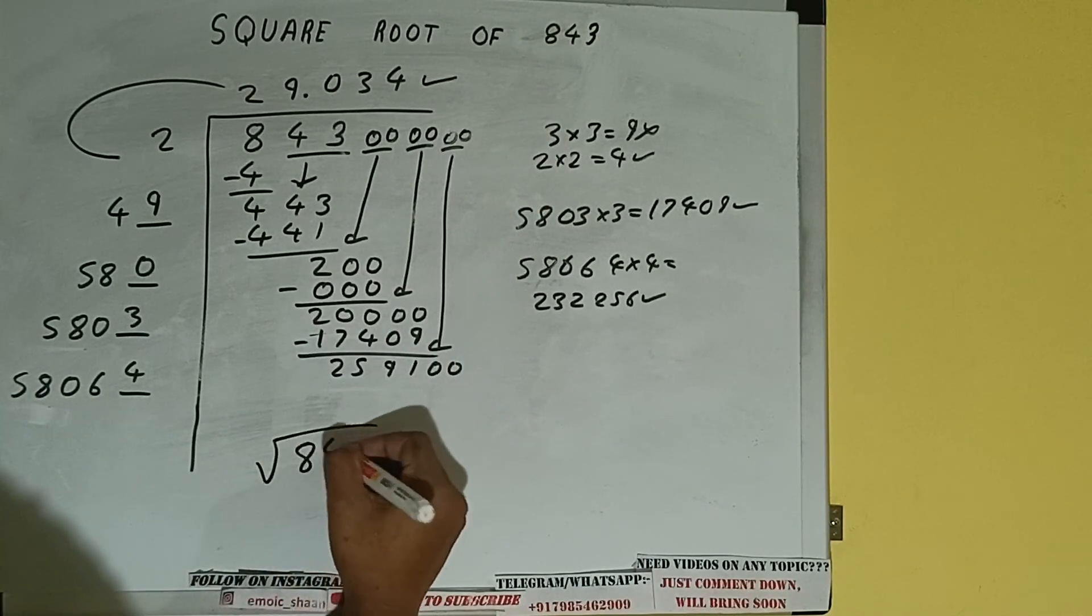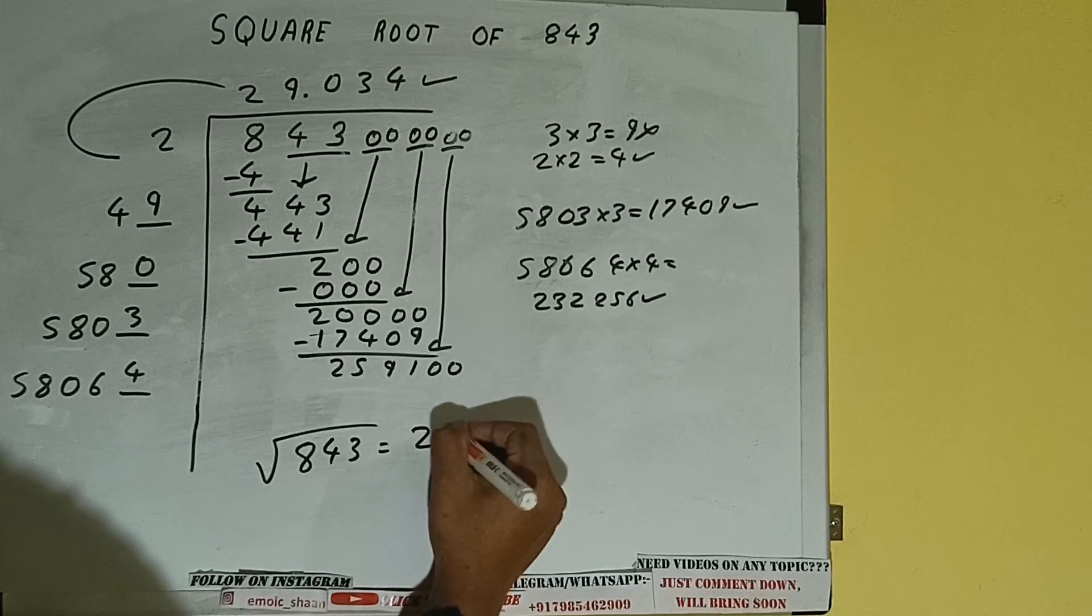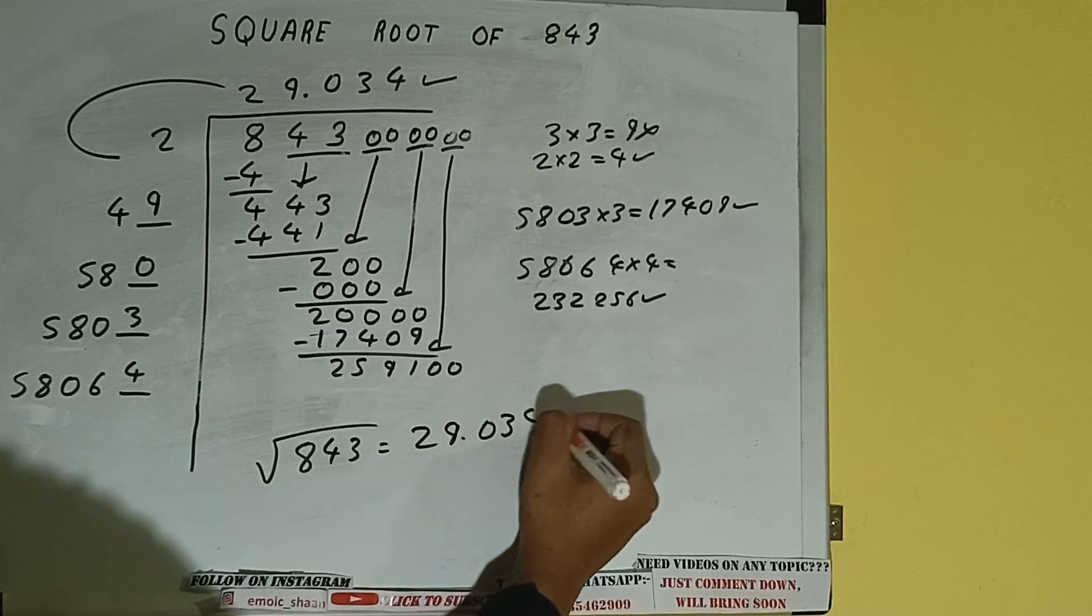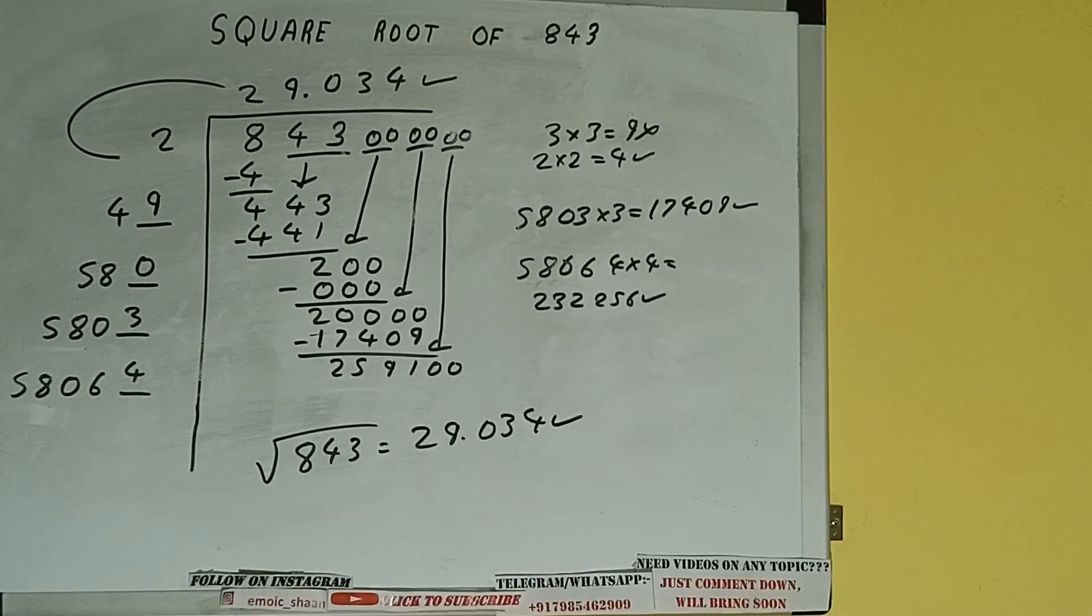So square root of 843 will be 29.034. That will be the answer. So this is all about square root of 843.